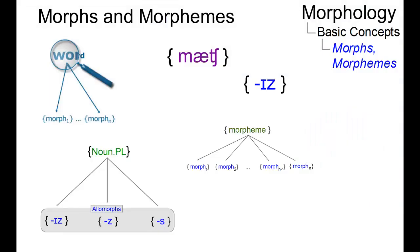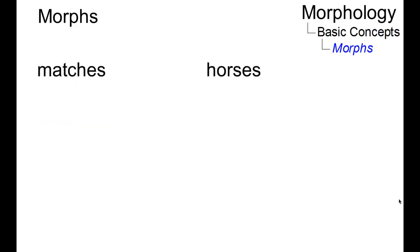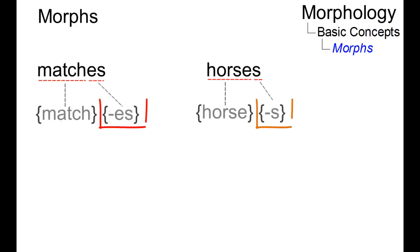Morphs are the basic building blocks of words. Here are two present-day English words. We get two morphs per word, but since the representation is an orthographical one, we have to postulate two different morphs for the plural if we leave the base form intact.